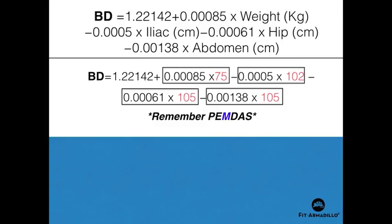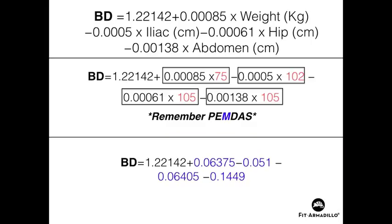Everything is boxed out with our sample data, and we're going to do the M part of PEMDAS — multiply first. The first number stays because it wasn't involved in a multiplication. Then I have four new numbers obtained by multiplying: 0.00085 times 75 gives 0.06375, and so on down the equation. After plugging in our values, we multiply wherever we see multiplication.